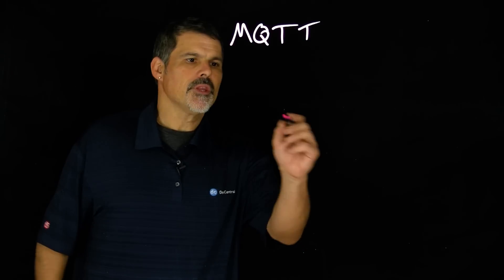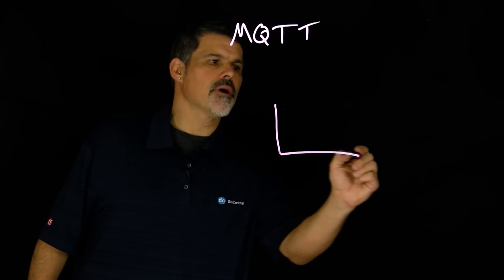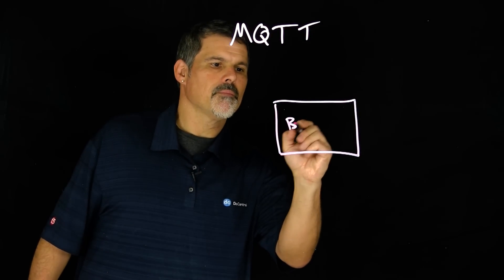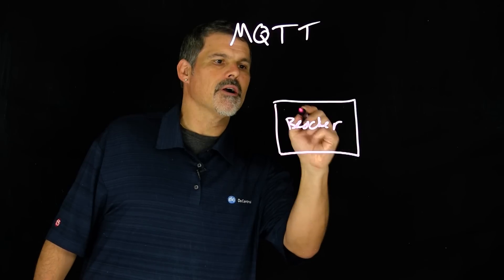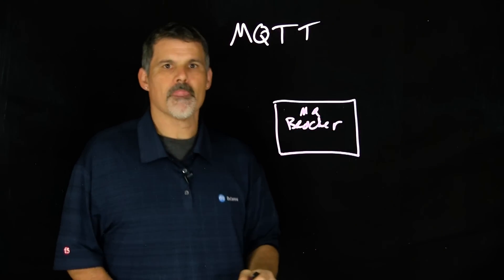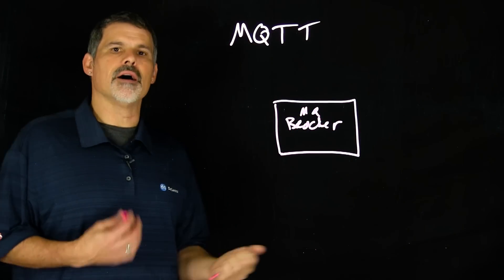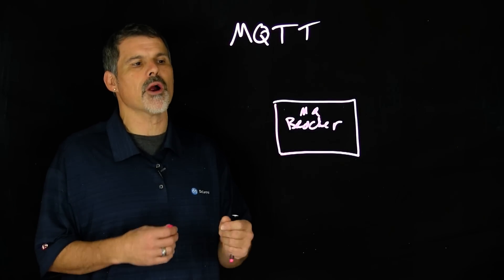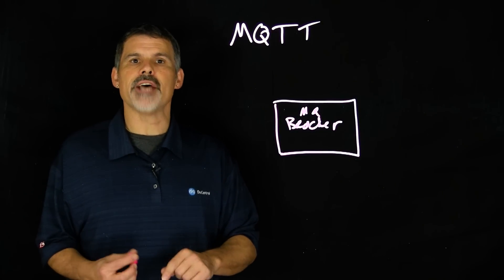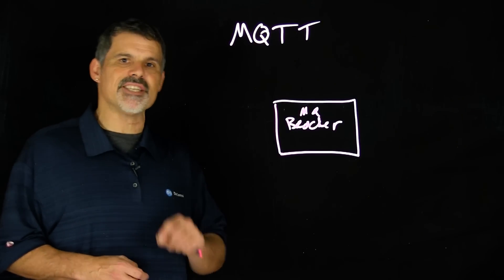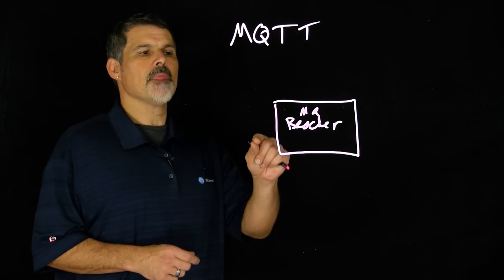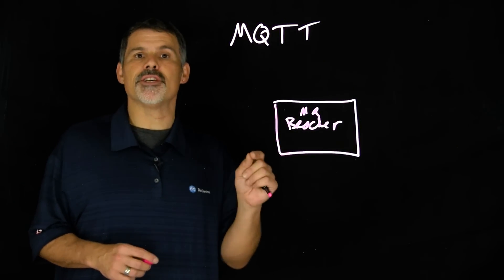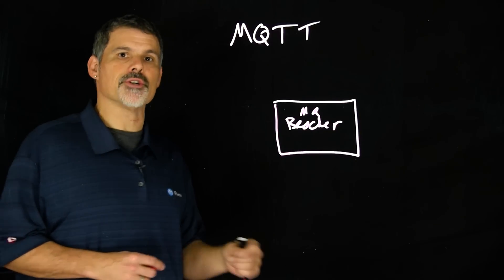Now first off, you need a broker, an MQ broker. It's a gateway, a receiver, a server, if you will, and it allows for the clients to send very short one-hop messages to the broker and also receive messages if they've subscribed to a certain topic.